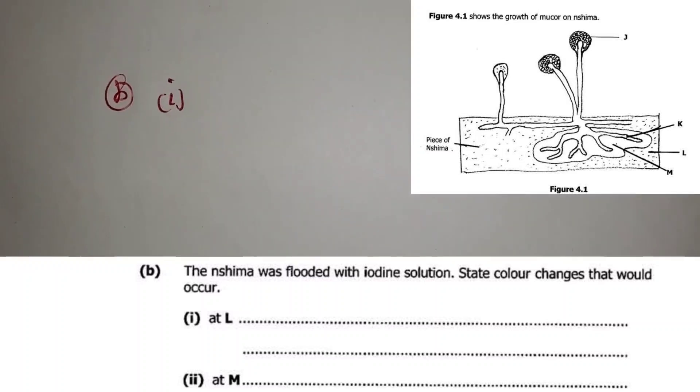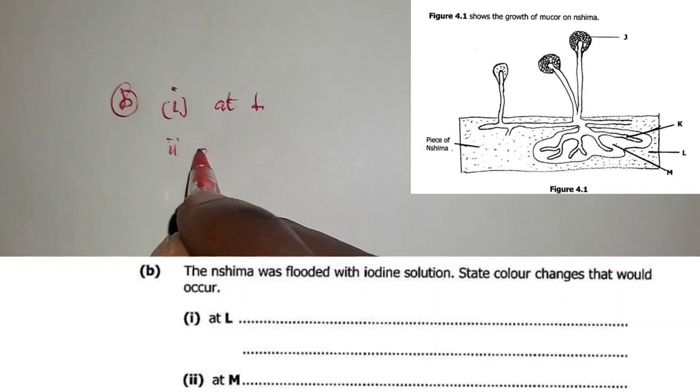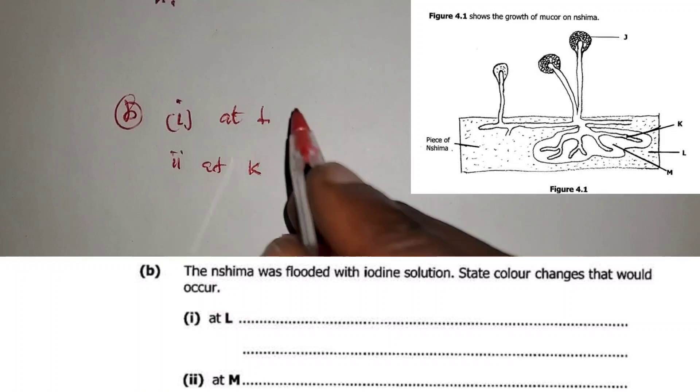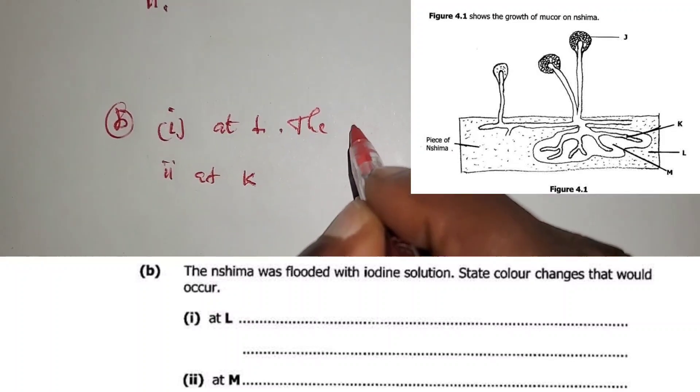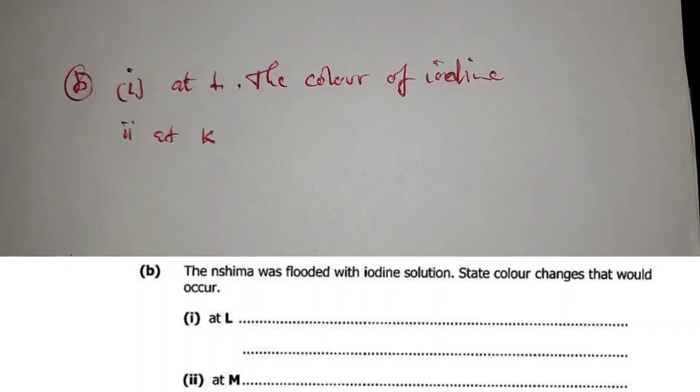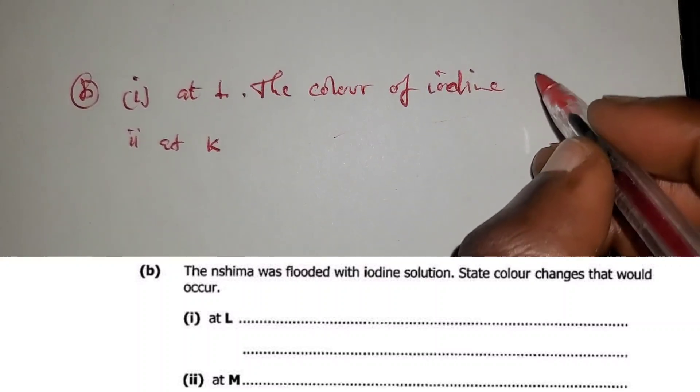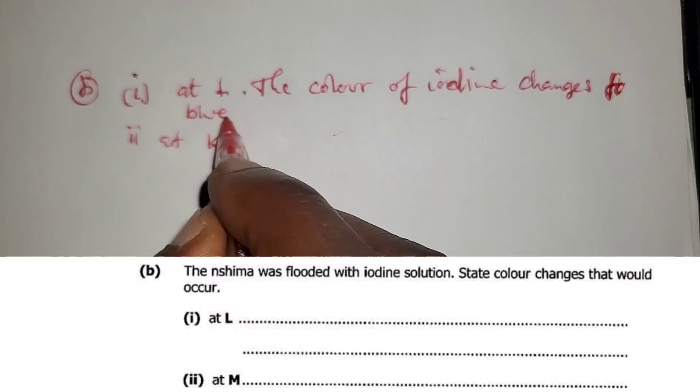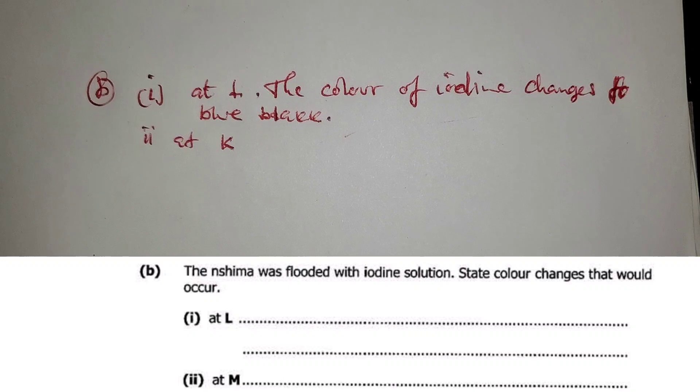Then (b)(i) is saying the nshima was flooded with iodine solution. State the color change that would occur at L and at M. So at L, the color of iodine solution changes to blue-black.